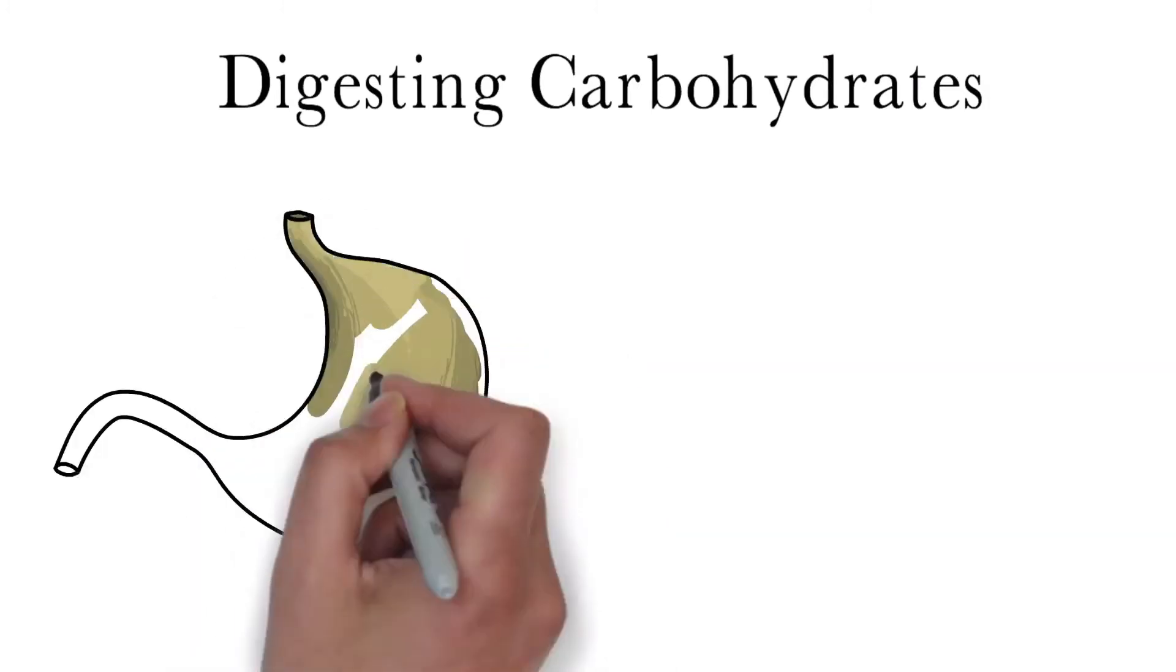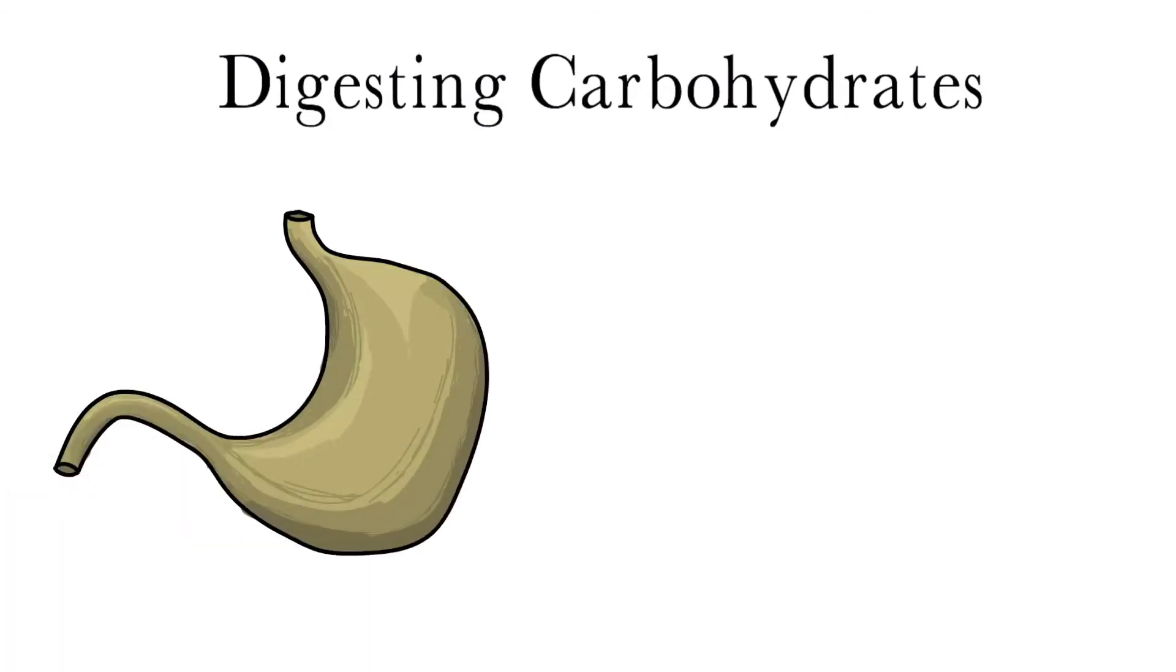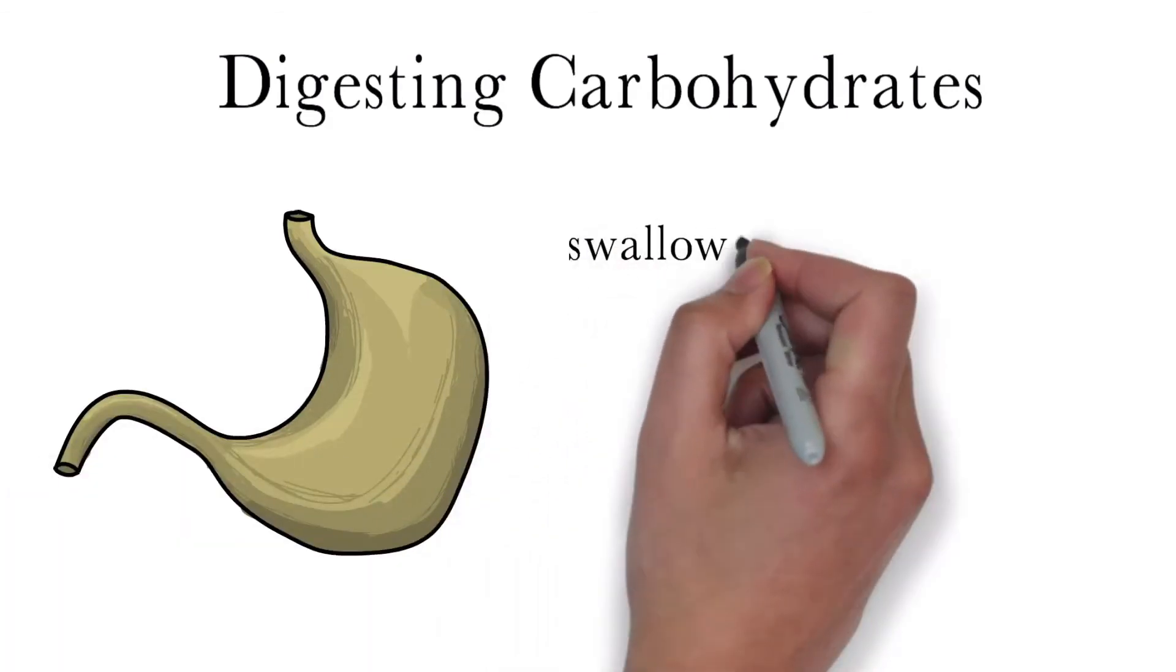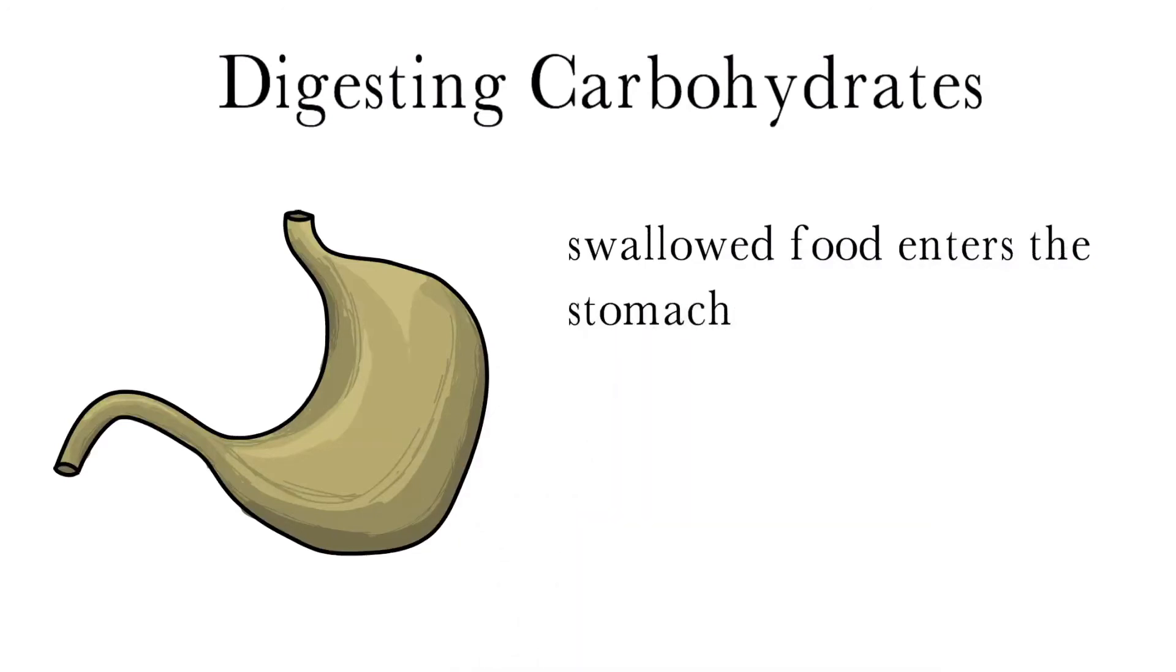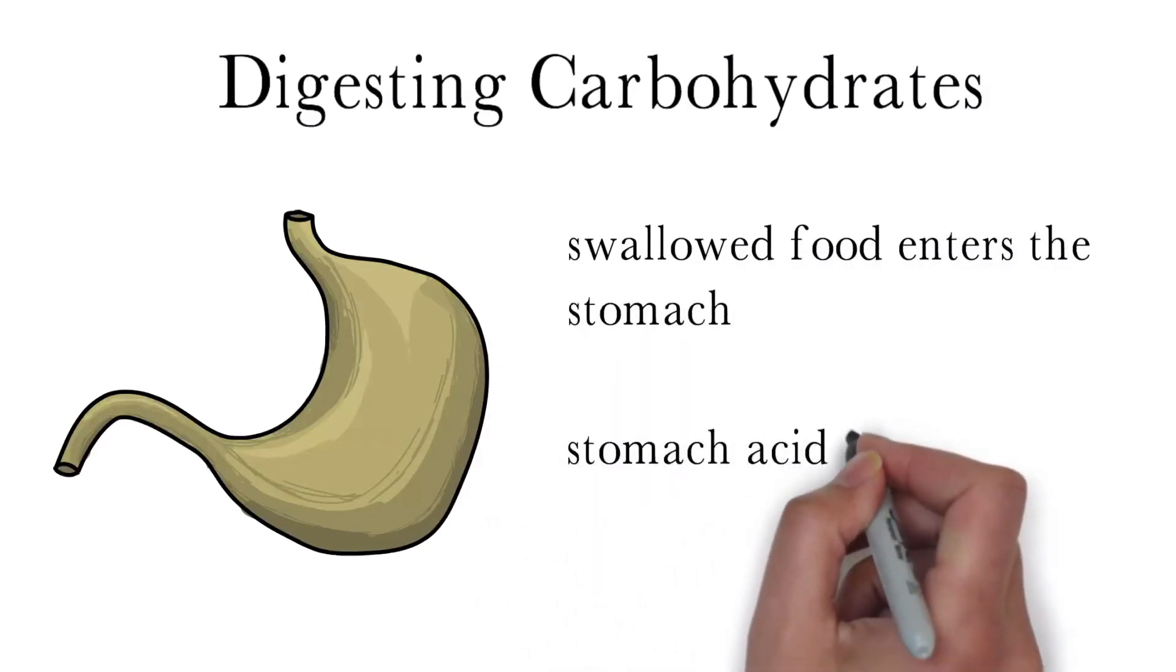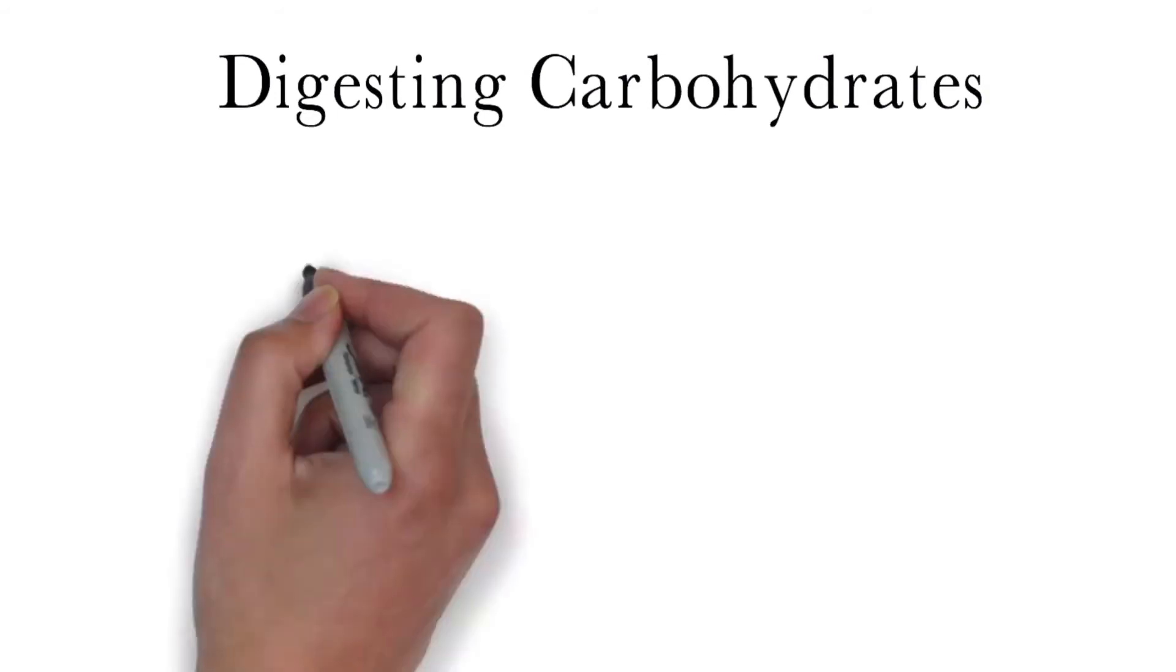When swallowed food enters the stomach, most of the amylase enzymes are inactivated by stomach acid, which can further break down starch to a small extent. However, very little carbohydrate digestion occurs in the stomach.